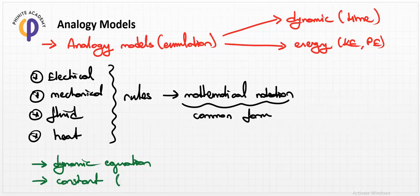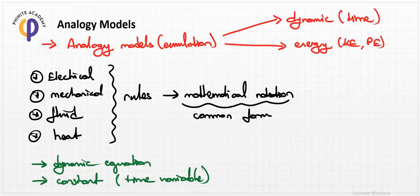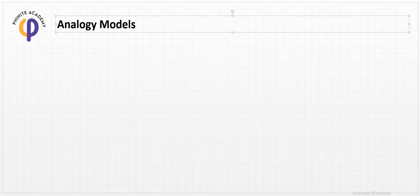The most important property of analogy models is that they are dependent on the time variable. This is the basic definition of analogy models — we can convert any form of energy patterns into another. We can create a specific comparison table related to these things.